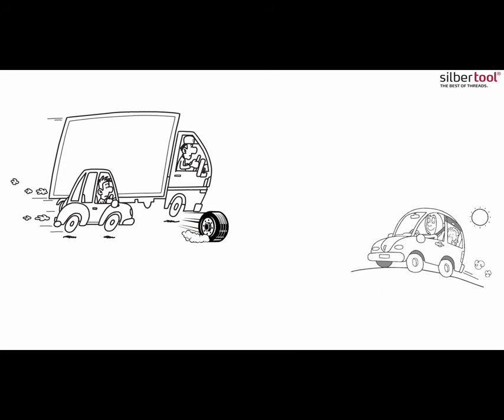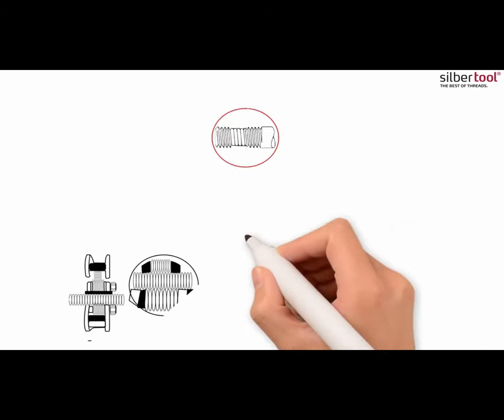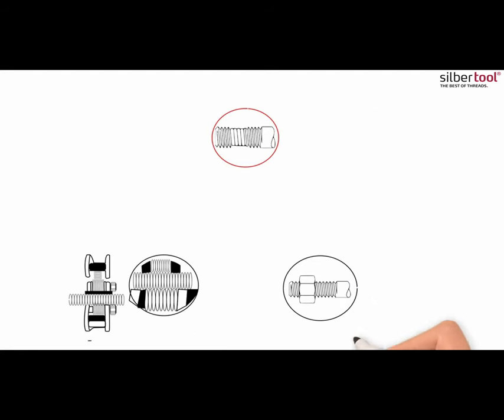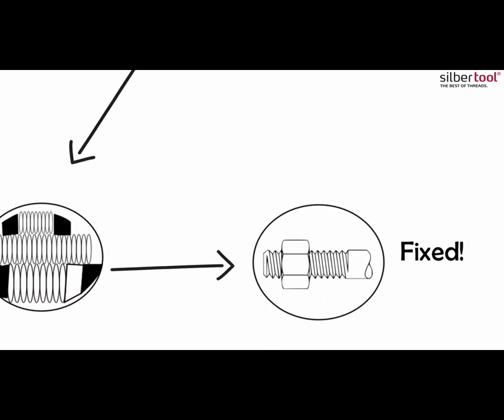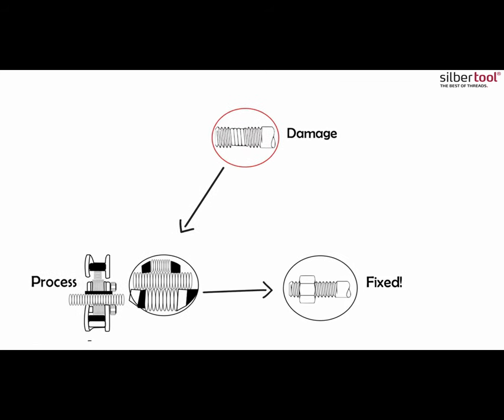Replacing parts can be expensive and cause a longer downtime. With our Silbertool Thread Saver, we have come up with a solution that not only fixes the thread but fully restores it, so it is as a new thread, by rolling the material back into its original geometry.